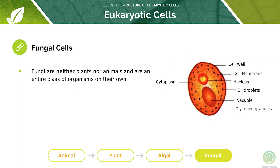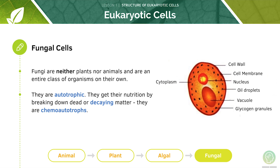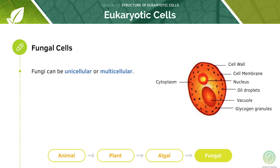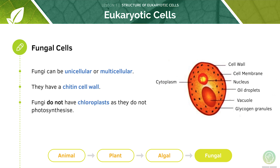Fungal cells are also eukaryotic. Fungi are neither plants nor animals and are an entire class of organisms on their own. Even though they may look like plants, fungi do not carry out photosynthesis — instead, they get their nutrition by breaking down dead or decaying matter, which is why they are called chemoautotrophs. They can be unicellular or multicellular; fungi include organisms like mushrooms, which are multicellular, and yeast, which are unicellular. Their cell wall is made out of chitin, not cellulose like in plants, and they do not have chloroplasts because they do not photosynthesise.